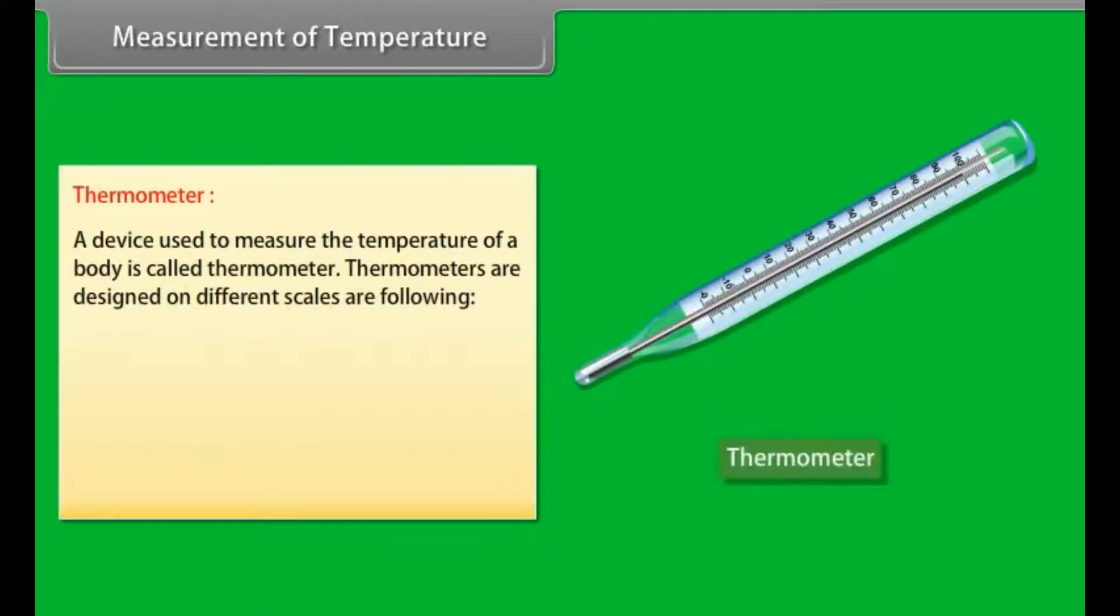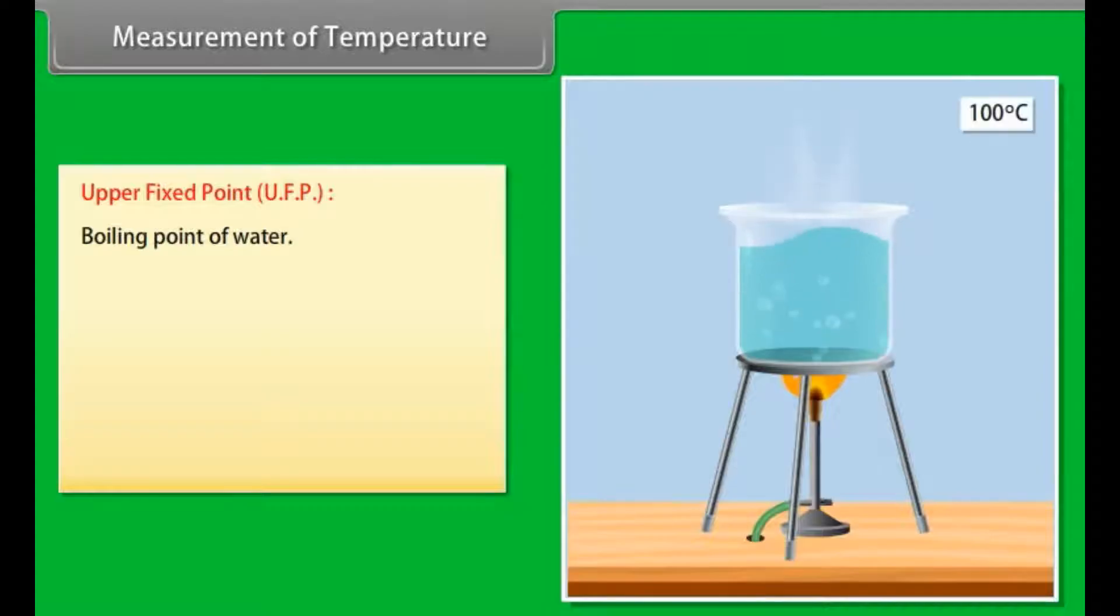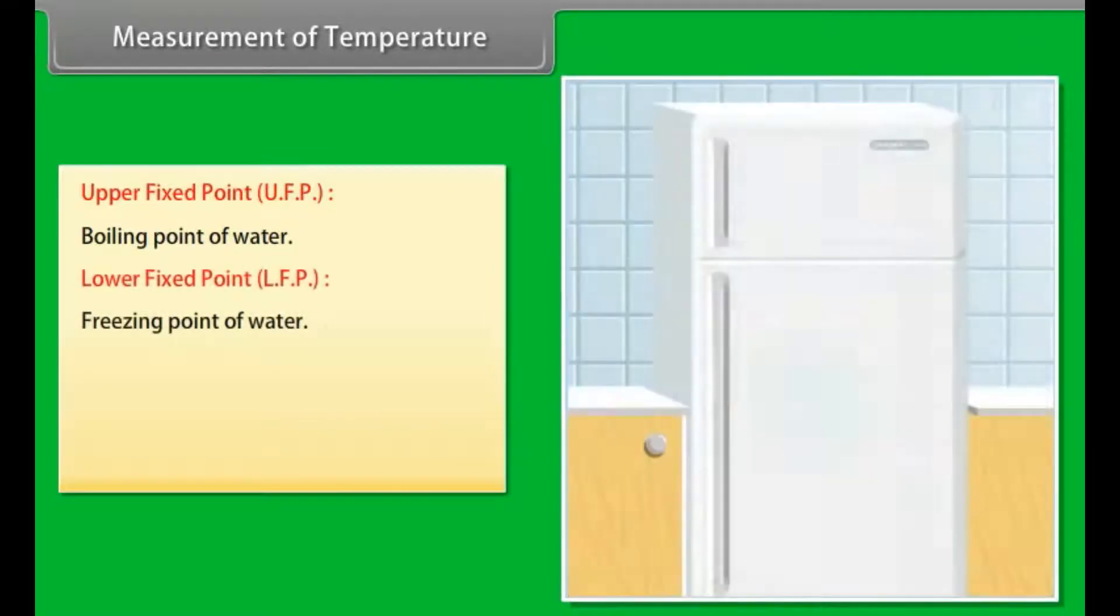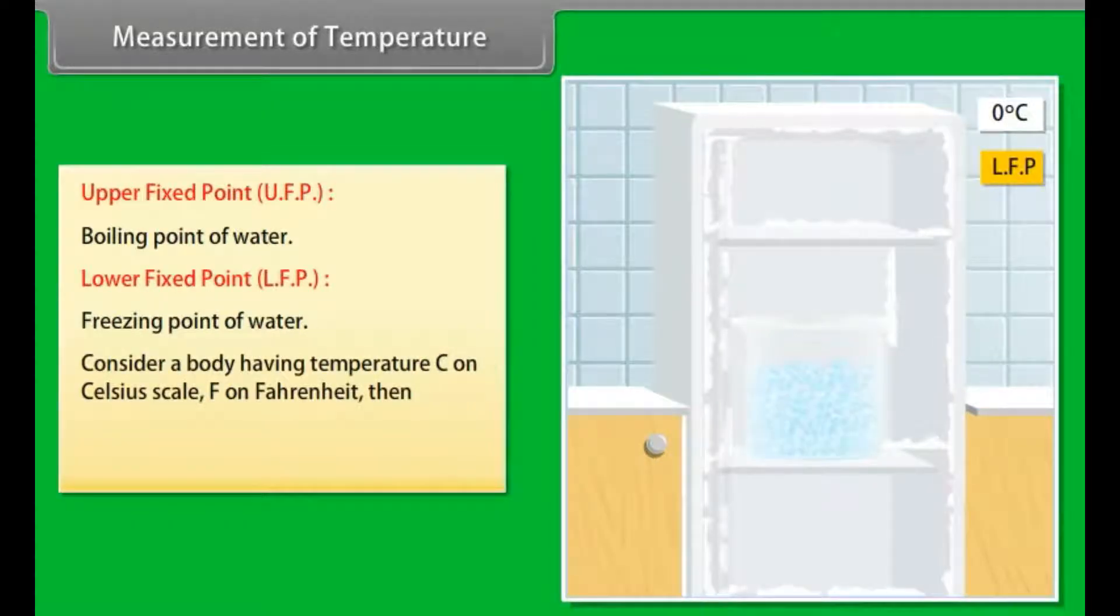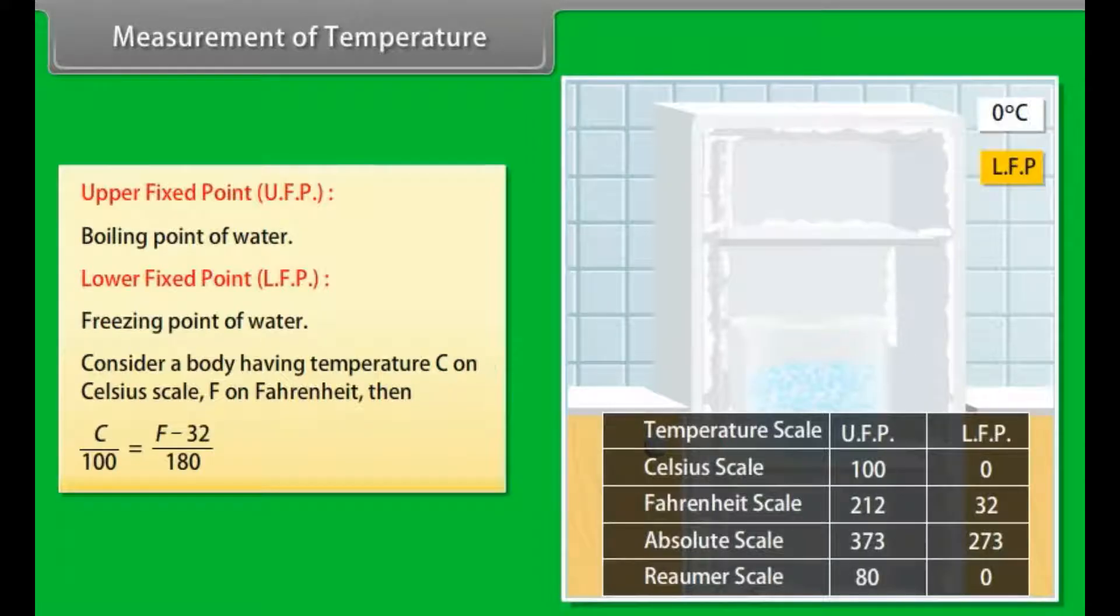Measurement of temperature. A device used to measure the temperature of a body is called thermometer. Thermometers are designed on different scales as following: Celsius scale, Fahrenheit scale, Kelvin scale, and Rommel scale. Boiling point of water is known as upper fixed point. Freezing point of water is known as lower fixed point. Consider a body having temperature C on Celsius scale and F on Fahrenheit scale. Then C/100 = (F-32)/180.